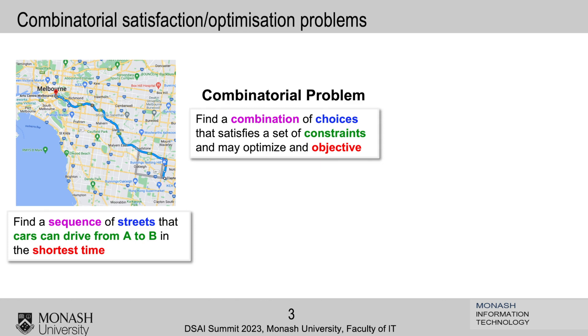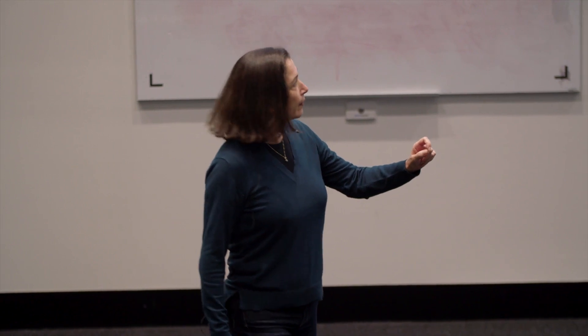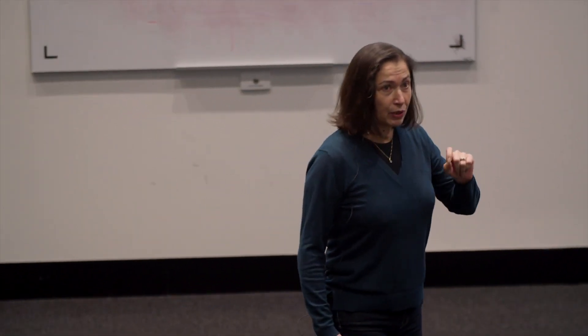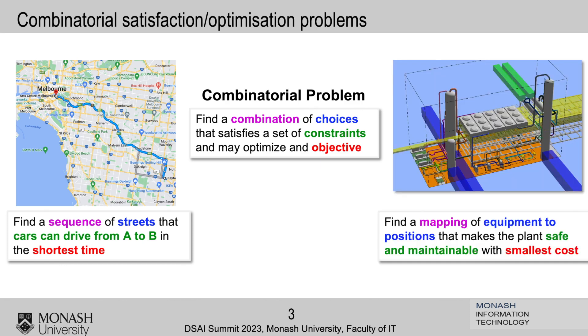Classic example: I love Google Maps because it saves me from getting lost. What does it do? Find a sequence of streets — those are your choices, all the possible streets — that my car can drive from point A to point B. Those are the constraints: they can't go the wrong direction, etc. And I want to go fast, so shortest time. That's one possibility.